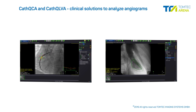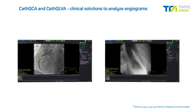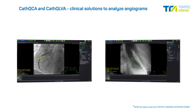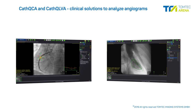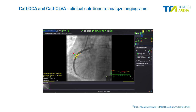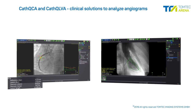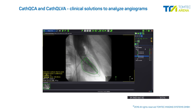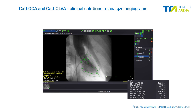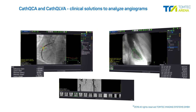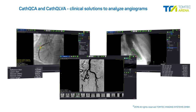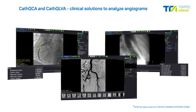CathQCA and CathLVA are integrated clinical solutions to analyze angiograms. The vessel wall of obstructed coronary arteries is automatically detected to perform comprehensive stenosis quantifications. Left ventricular volumes and function are calculated based on a tracing of endocardial borders. ImageCom also provides digital subtraction angiography for peripheral vessels.